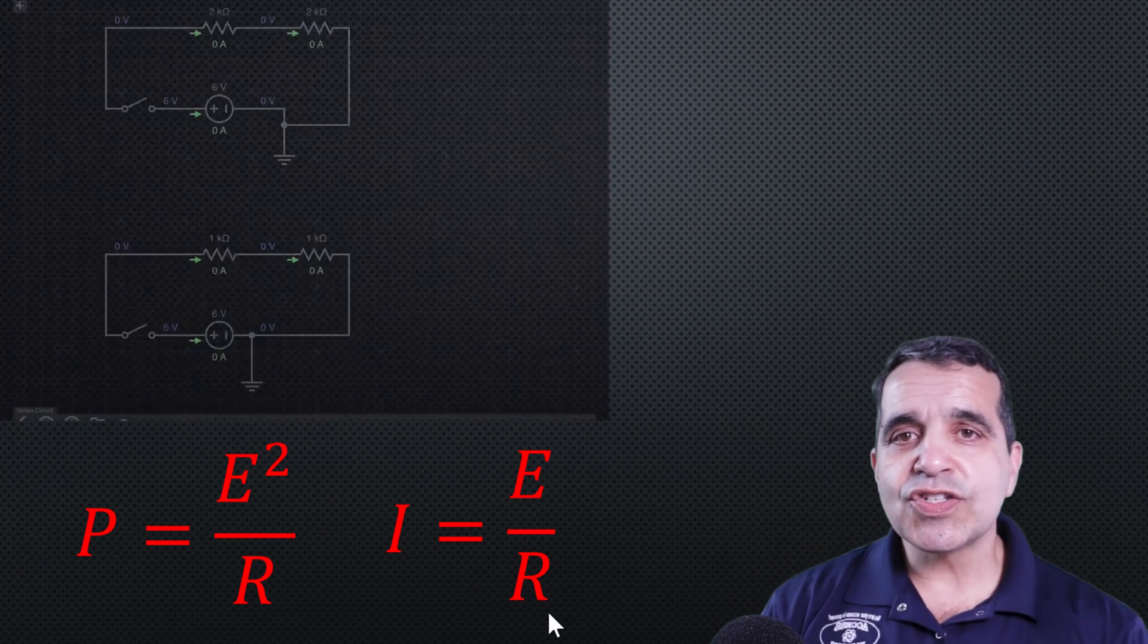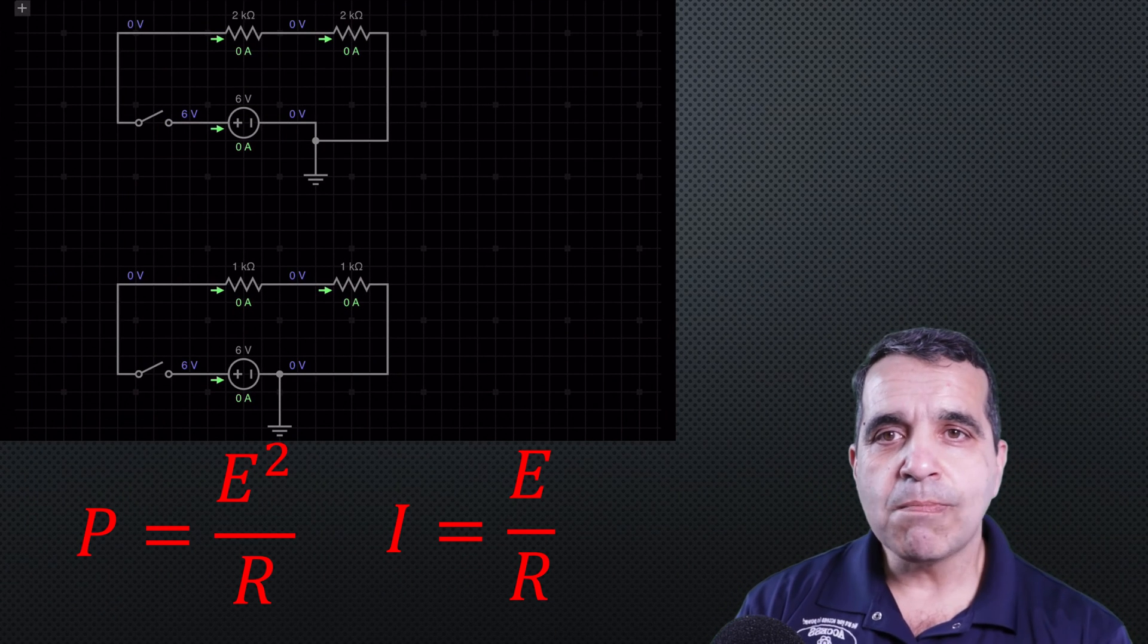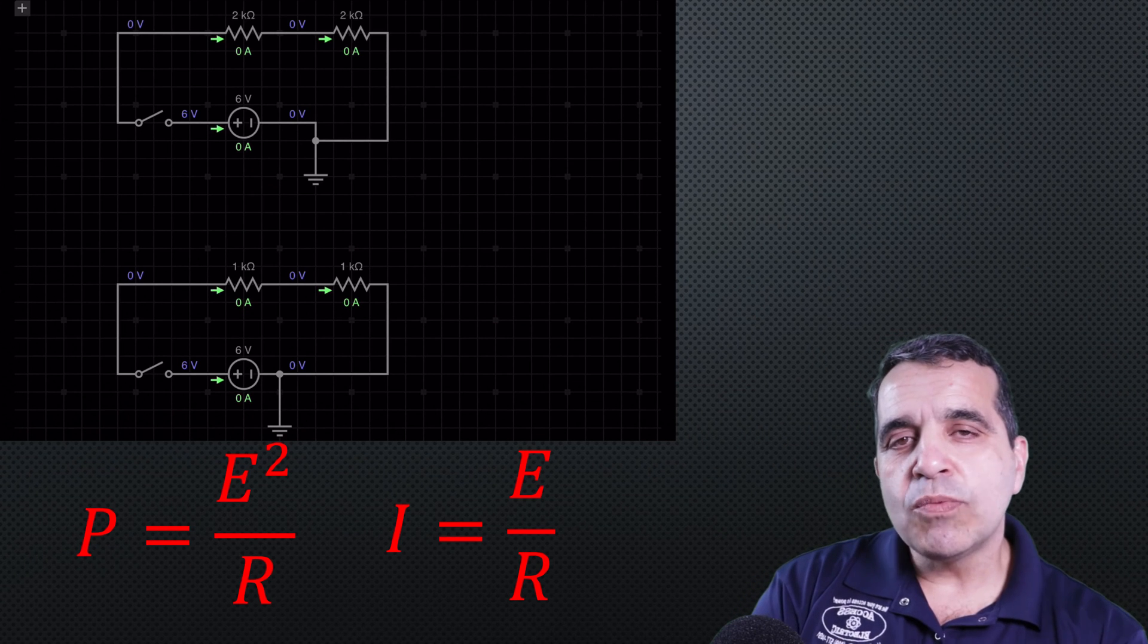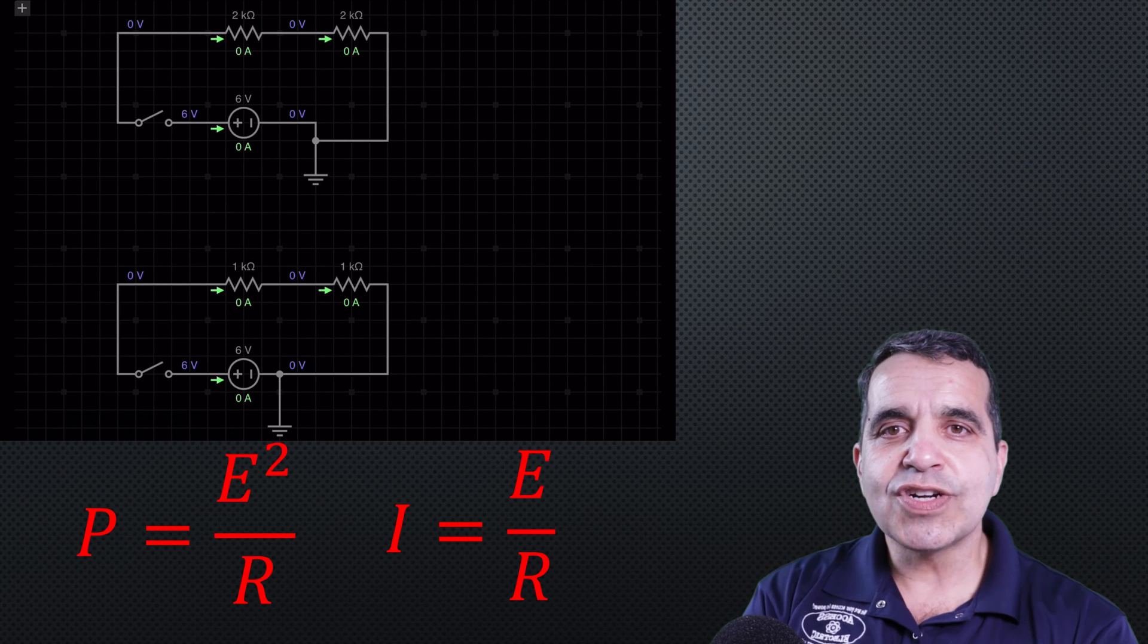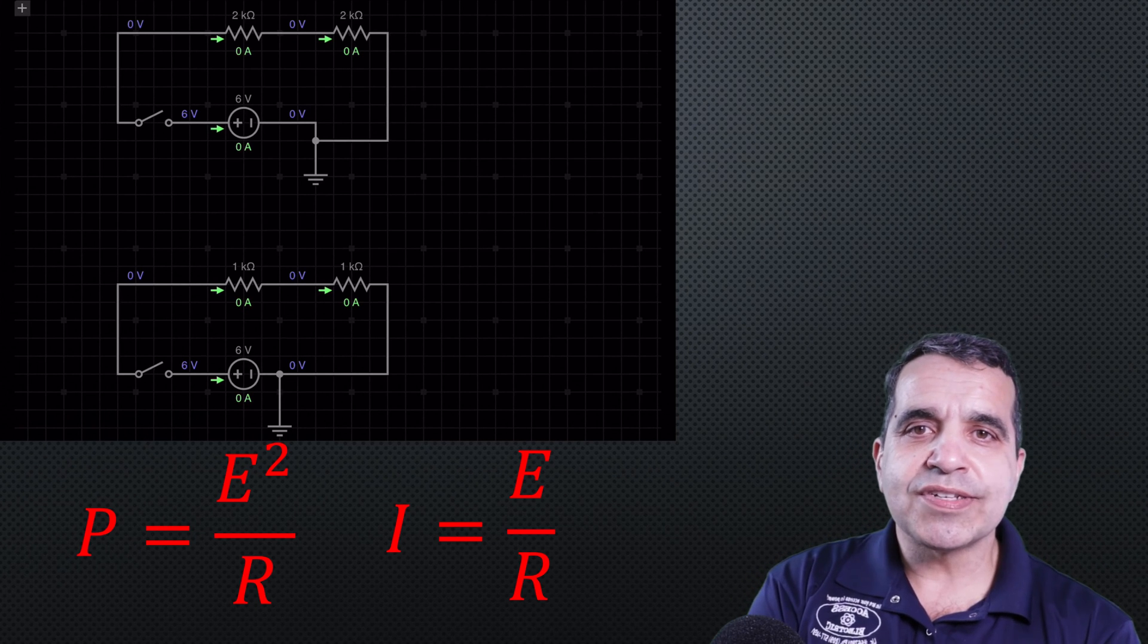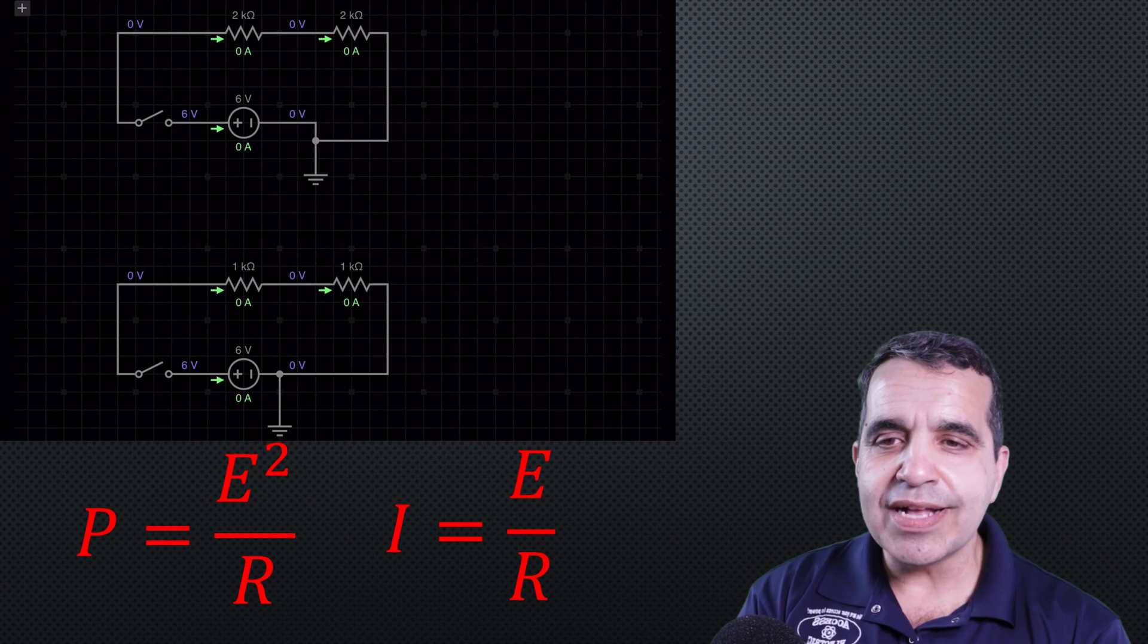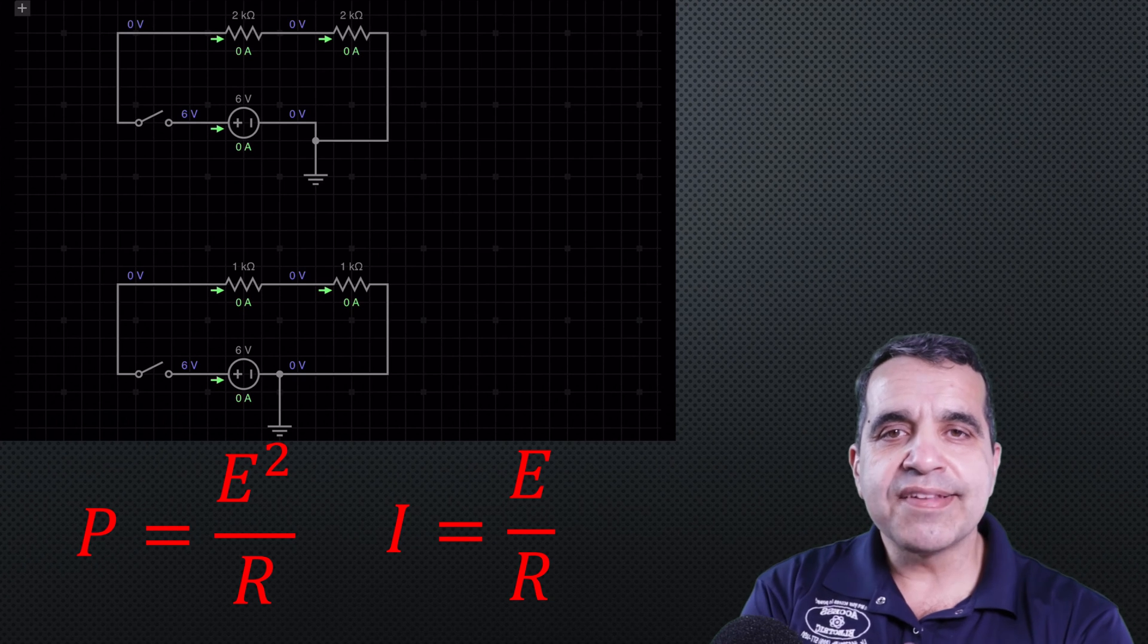Here, let me show you this circuit. This circuit on my screen, I have two circuits here. I have a circuit with two 1,000 ohm resistors and a 6-volt DC power supply. I also have a circuit with two 2,000 ohm resistors and a 6-volt DC power supply. So the only difference in these two circuits is that the top circuit has twice as much resistance as the bottom circuit.